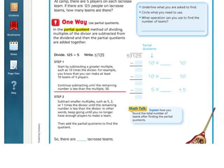Lesson 4.8 is about dividing using partial quotients, and we're just going to go through the lesson here. At camp there are 5 players on each lacrosse team. If there are 125 people on lacrosse teams, how many teams are there? So our problem is 125 divided by 5. So partial quotients here, what that means is you're going to try to think of smaller numbers that would add up to 125 that you can divide.